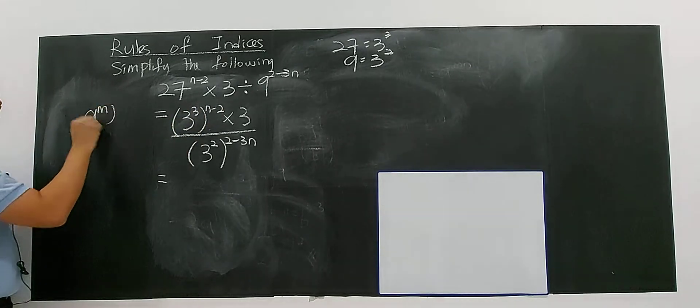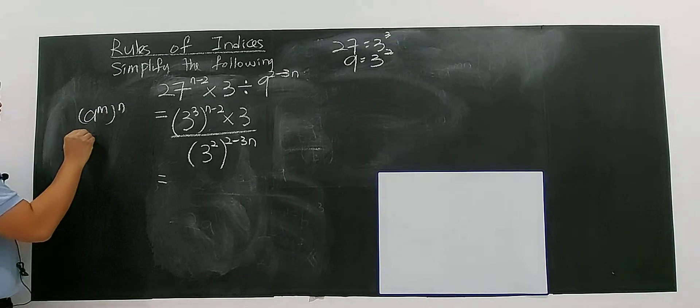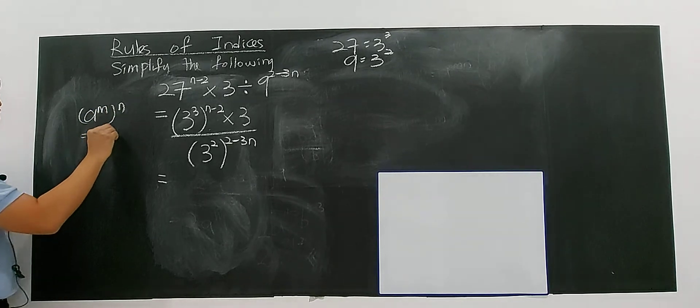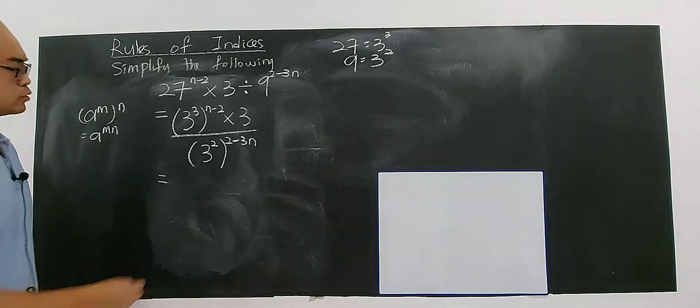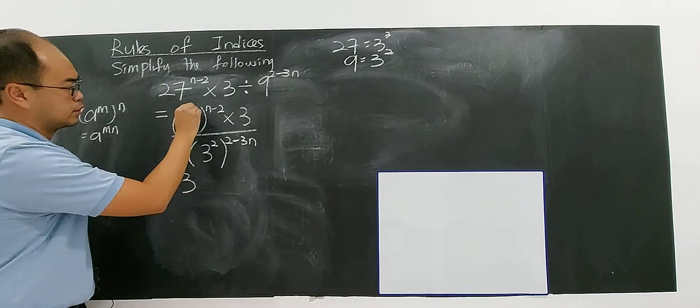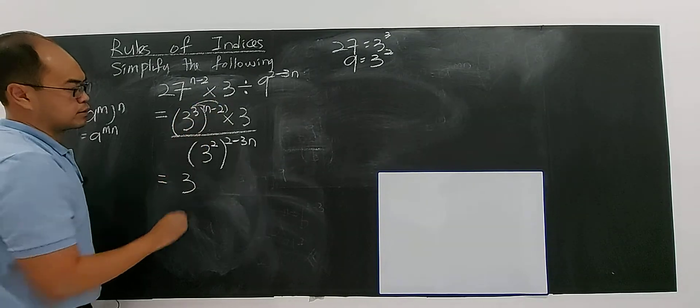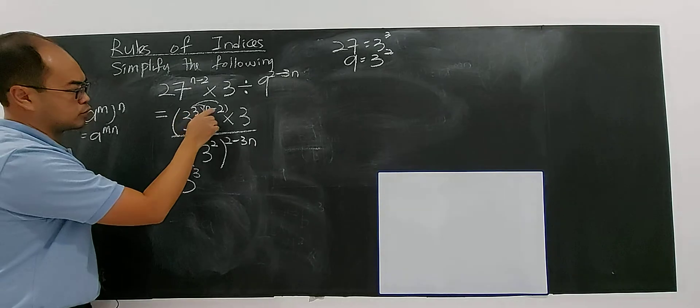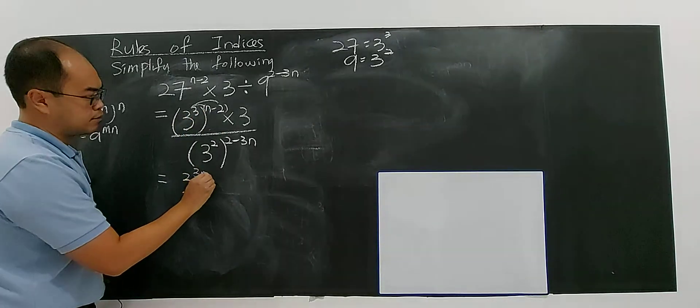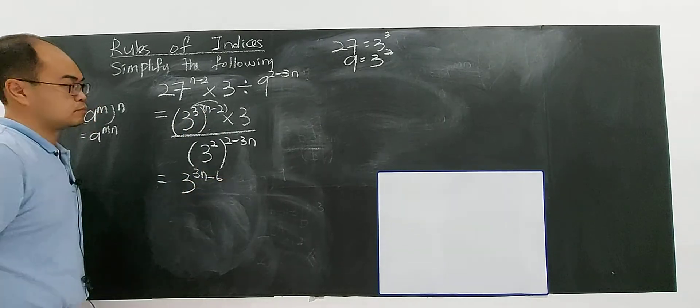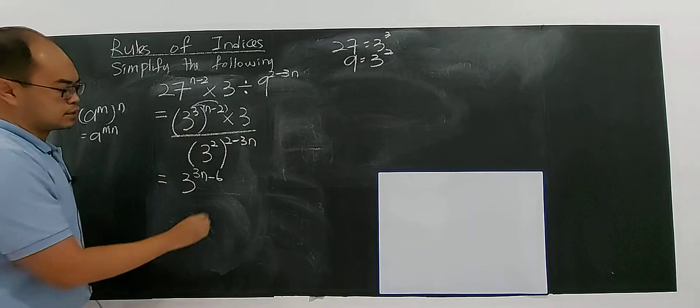What you're supposed to do is you can multiply. If you have a to the power of mn, you can do a to the power of m multiply with n. So then you expand - 3 to the power of 3n minus 6.